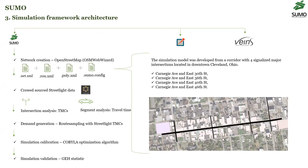Our simulation framework in SUMO uses the OSM Web Wizard to obtain various simulation files. Our network is in Cleveland — downtown, near the university — and it's a corridor with four signalized intersections. We use the OSM Web Wizard to obtain the network files, the route files, and other files to simulate the network. We also use crowdsource Streetlight data for turning movement counts and travel time for model calibration and validation.